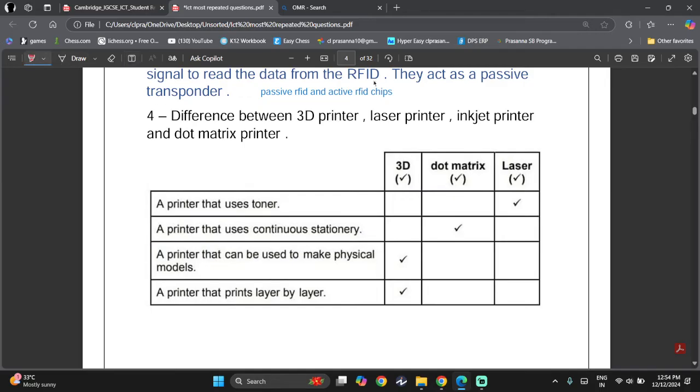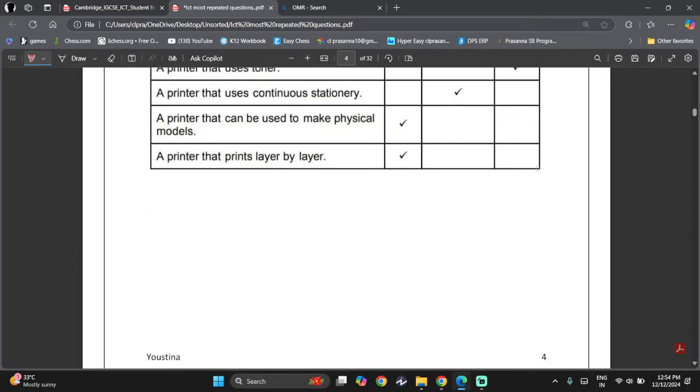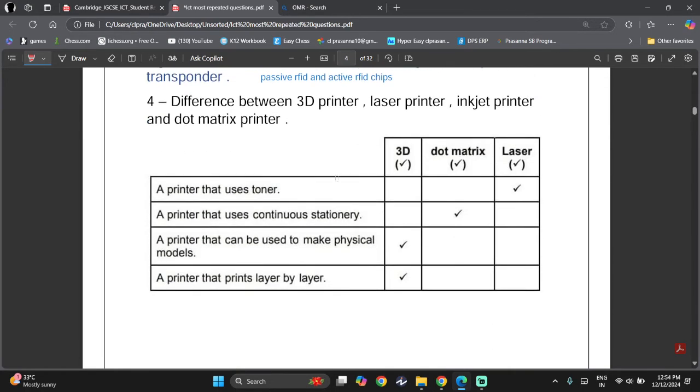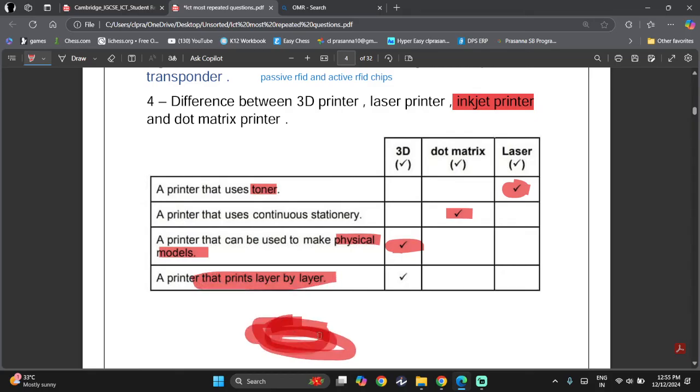What's the difference between 3D printer, laser printer, inkjet printer, and dot matrix printer? Now this is something that they have explained it here. We'll look at that. So a printer that uses toner. Now, toner is used by laser printers. Ink is used by inkjet printers. Okay. I don't know why they haven't added it here. The printer that uses continuous stationary, that's dot matrix, that can use physical models. Only 3D printers can make physical models. And a printer that prints layer by layer. So first layer, then second layer, third layer, fourth layer, that's how the whole object is made. So that one is, this one is also 3D printers.